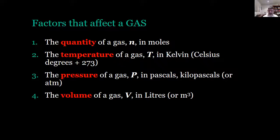The first is how much of it we have—the quantity of the gas—and this is represented by the symbol n for number of moles. We can use Avogadro's law to convert this into molecules or atoms, but moles is the most convenient unit that we use in chemistry.